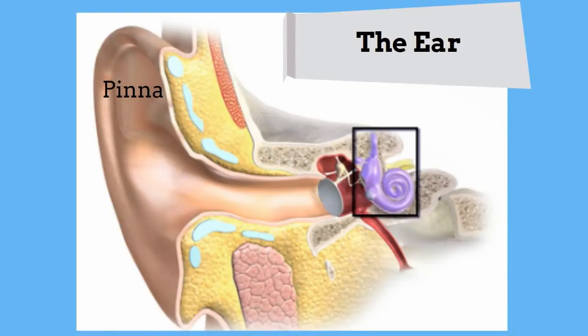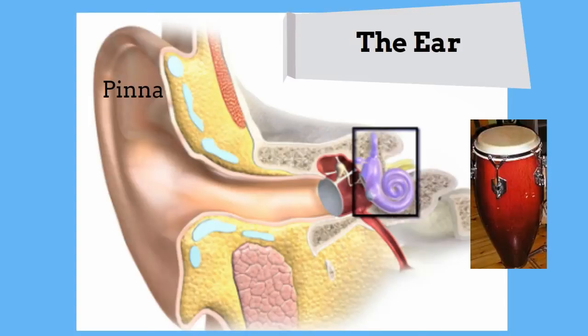This membrane vibrates when the sound waves strike it. It then vibrates in the same way that the surface of a drum may vibrate when it is struck.